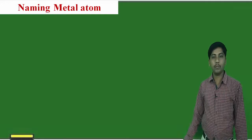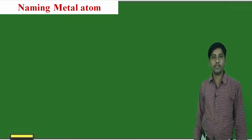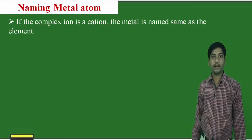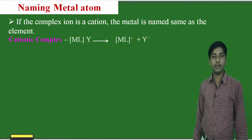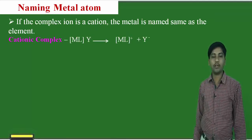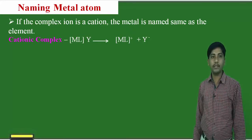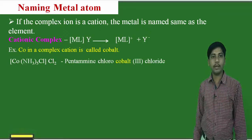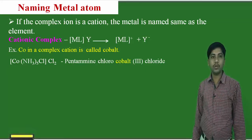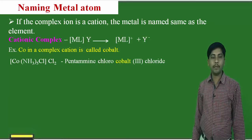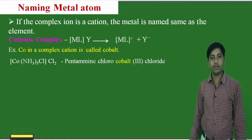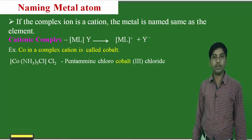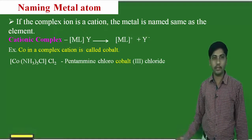Now we will see how to name the metal atoms. In complexes, if the metal atom is in a cationic complex, the name is written as it is without any change. For example, in [Co(NH3)5Cl]Cl2, the name is pentaamminechloro cobalt(III) chloride — the metal name 'cobalt' is used as it is because the complex is cationic.